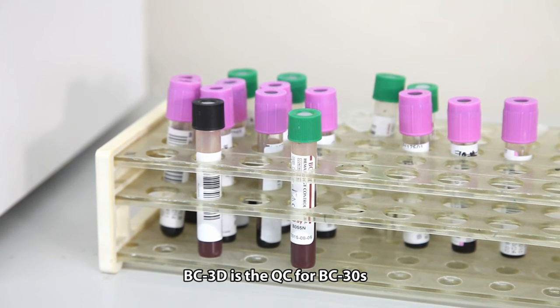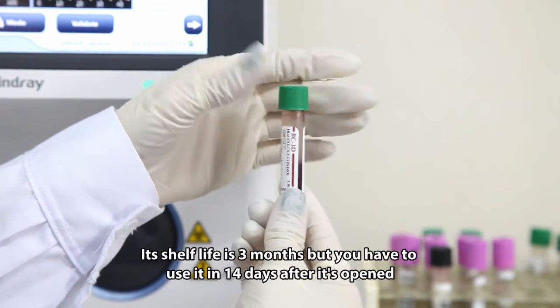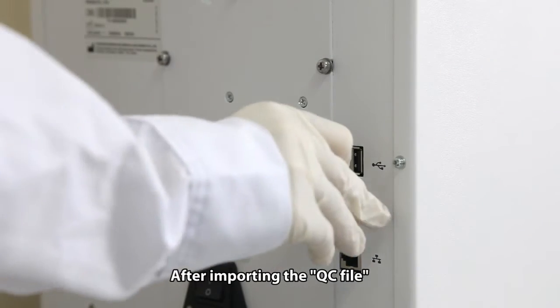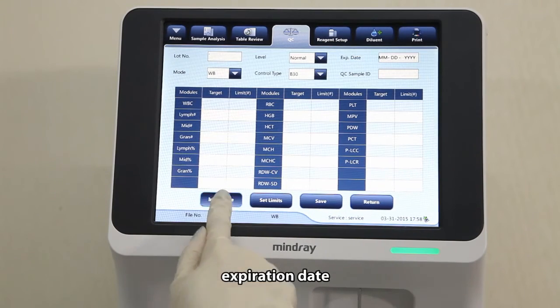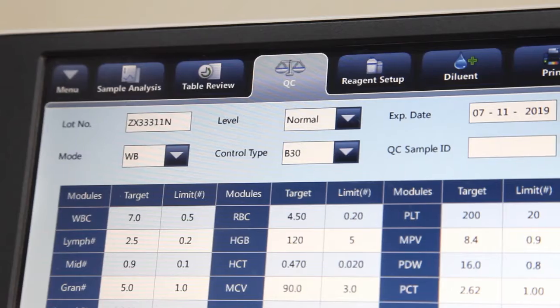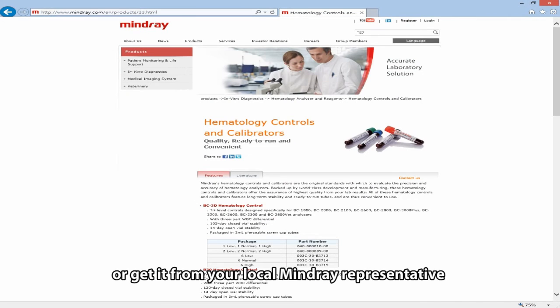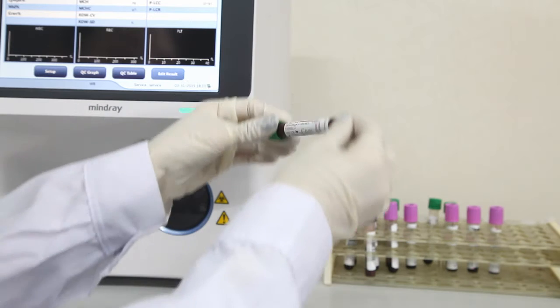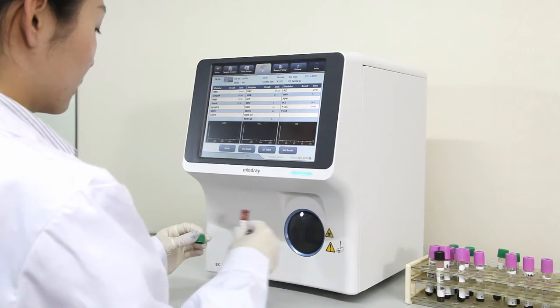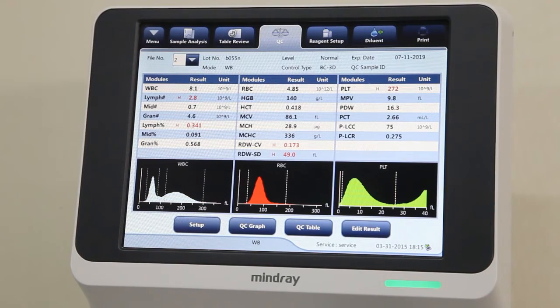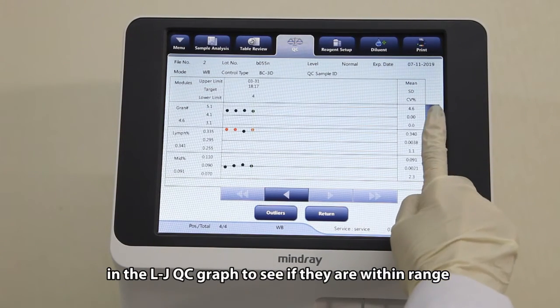BC-3D is the QC for BC-30S. Its shelf life is three months, but you have to use it in 14 days after it's open. After importing the QC file, BC-30S can load the target value, lot number, expiration date, and level of QC automatically. You can download the QC file from MindRay website or get it from your local MindRay representative. Run the QC through the sample probe in QC mode after mixing well. You may review the QC results in the LJQC graph to see if they are within range.